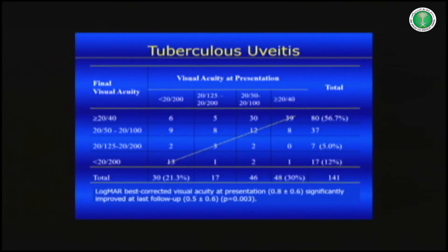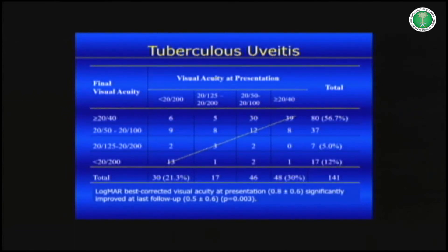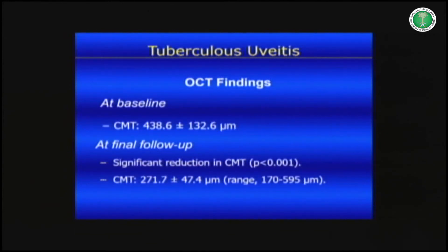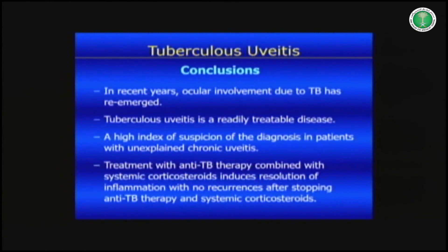Looking at visual outcomes: good vision — 6/24 or better — was achieved in about 60% of eyes. This is not very high, mainly related to delayed presentation. However, when we compared initial vision with last vision at follow-up, there was significant improvement. Even macular thickness improved: the mean before treatment was 438 microns and after treatment was reduced to 217 microns — a significant reduction in macular edema.